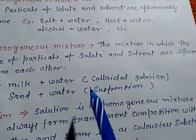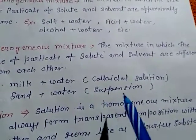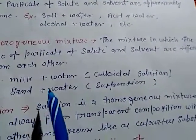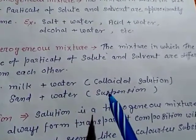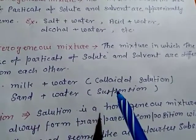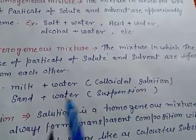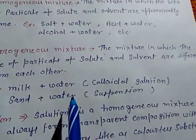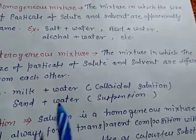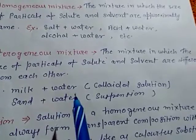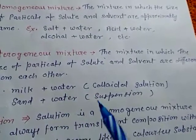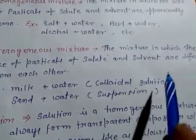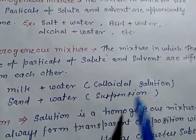Sand plus water is also known as a suspension. When sand is mixed with water, some particles settle down and some particles remain distributed and scattered in the water, visible to the naked eye. That type of solution is known as a suspension.